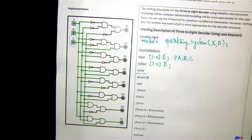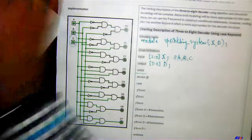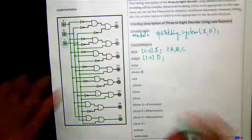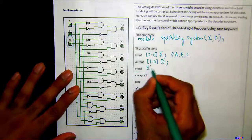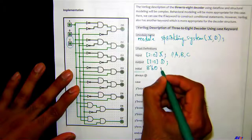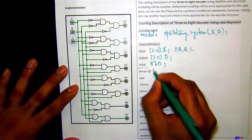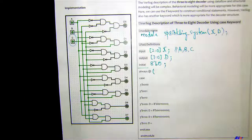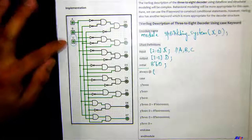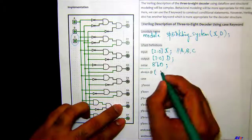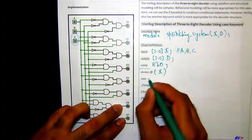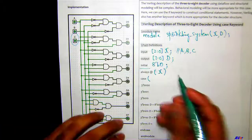Initially, we set all outputs to zero using an 8-bit zero initializer. You can also write eight explicit zeros or use 8'b0 — both work. Then, since A, B, and C — which are basically X — are what change the sprinkler values, we write: always @(X). Then we use a case statement on X.